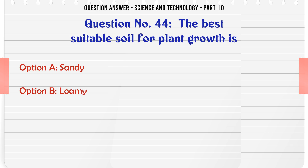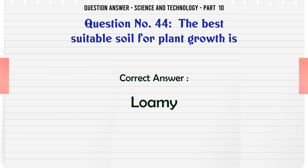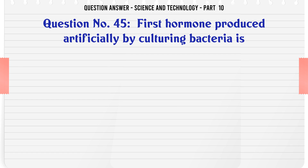The best suitable soil for plant growth is. A. Sandy. B. Loamy. C. Clay. D. None of the above. The correct answer is Loamy.